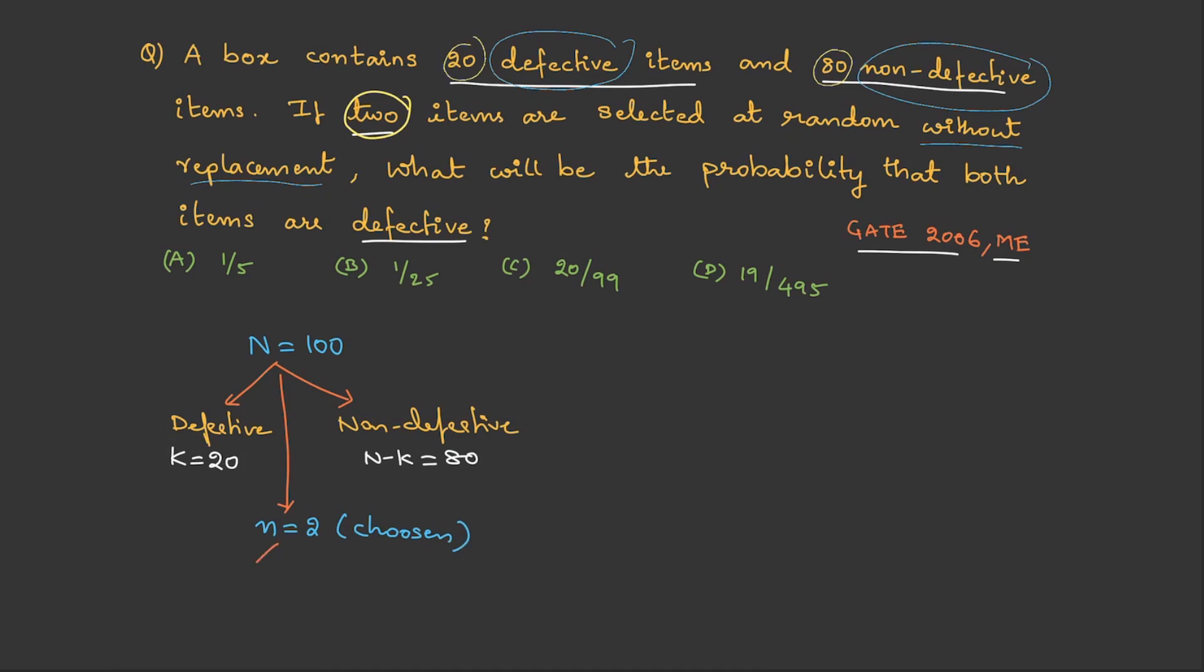Obviously, this also will have two categories. One is defective, other is non-defective. In the question, they are asking what is the probability that both the items have to be defective. Therefore, x, whatever you choose, both must be defective, non-defective should be 0.